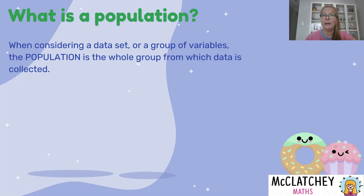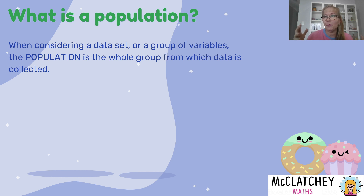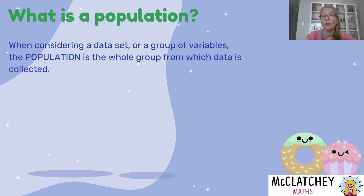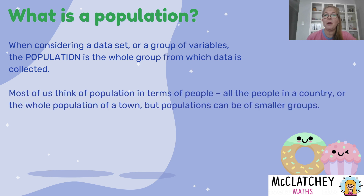What is a population? Most of us know what the population of a country is — for example, the population of Australia is about 28 million people. But when we're considering data sets or a group of variables, a population is the whole group from which the data has been collected — it's not the same as the number of people in a country.